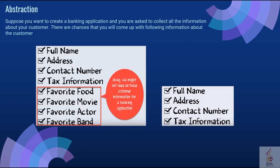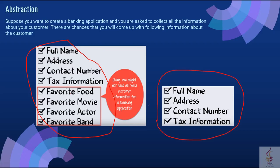Now suppose you want to create a banking application and you are asked to collect all the information about your customer. There are chances that you will come up with a lot of information about the customer, but not all of this information is required to create a banking application. So you need to select only the useful information for your banking application from this pool — data like name, address, tax information, etc. Since we have selected the information from a large pool, the process is referred to as abstraction in OOP.